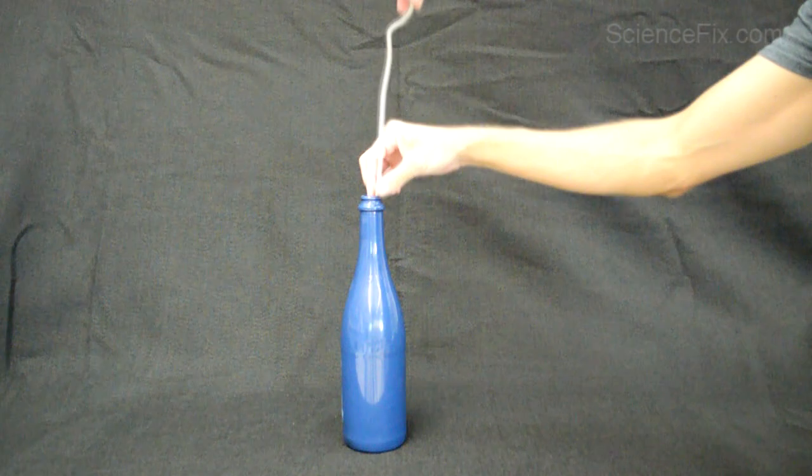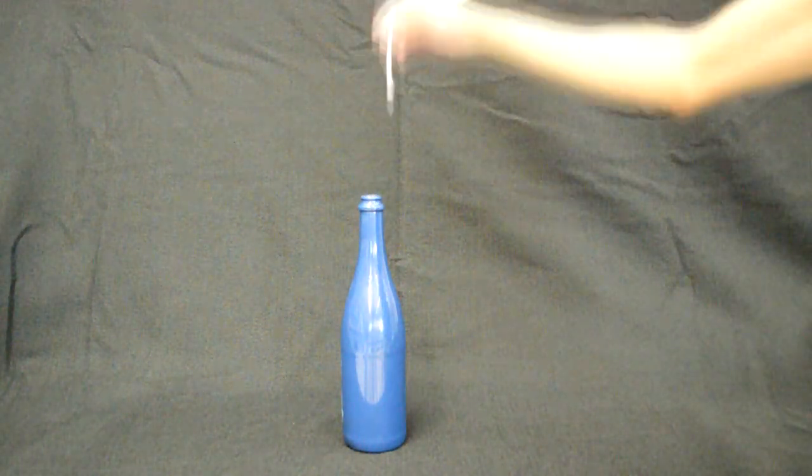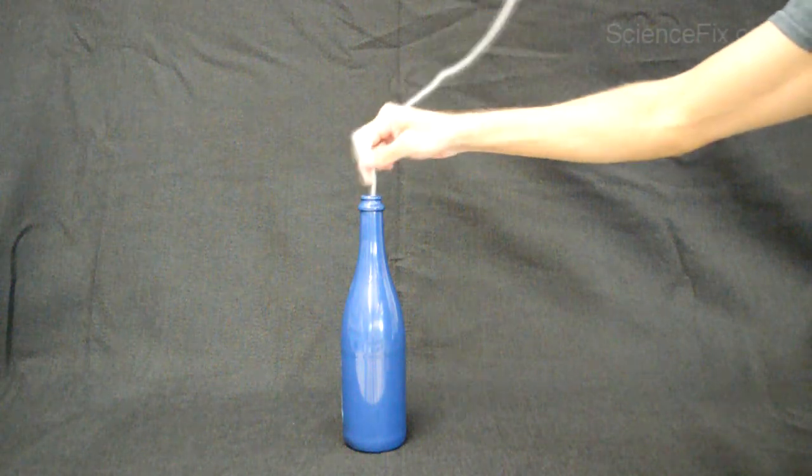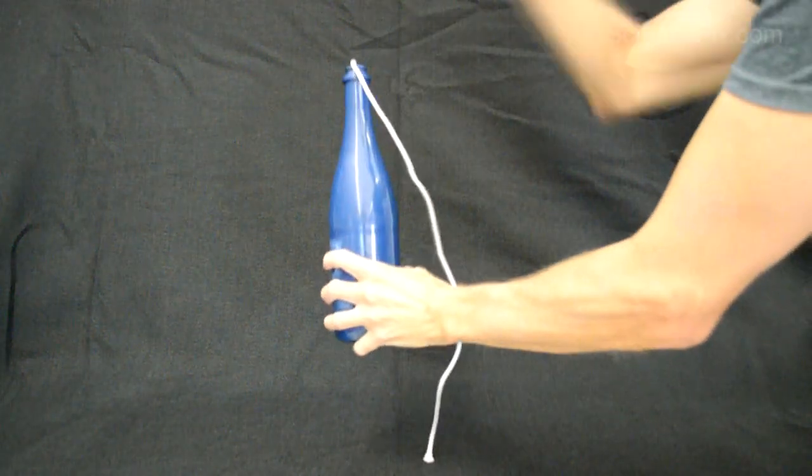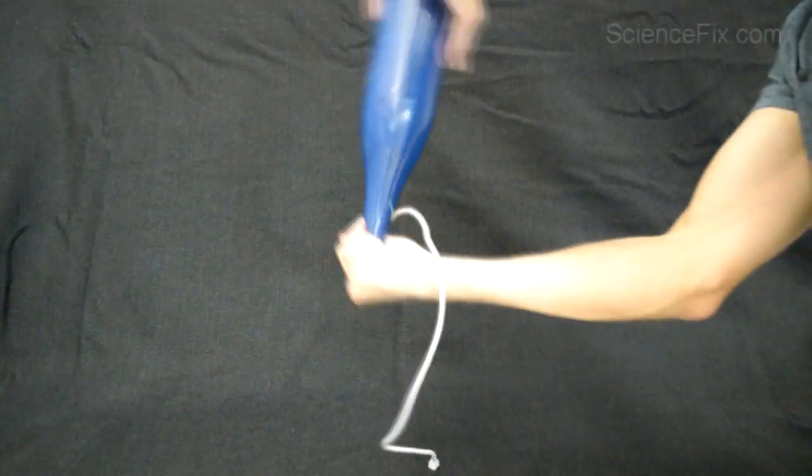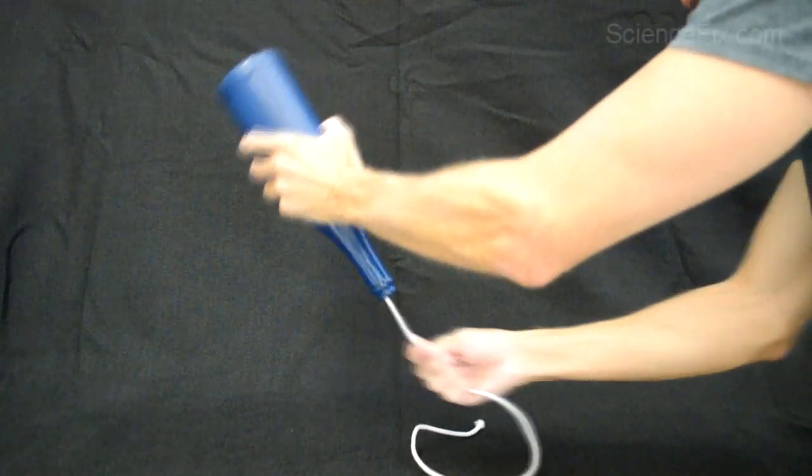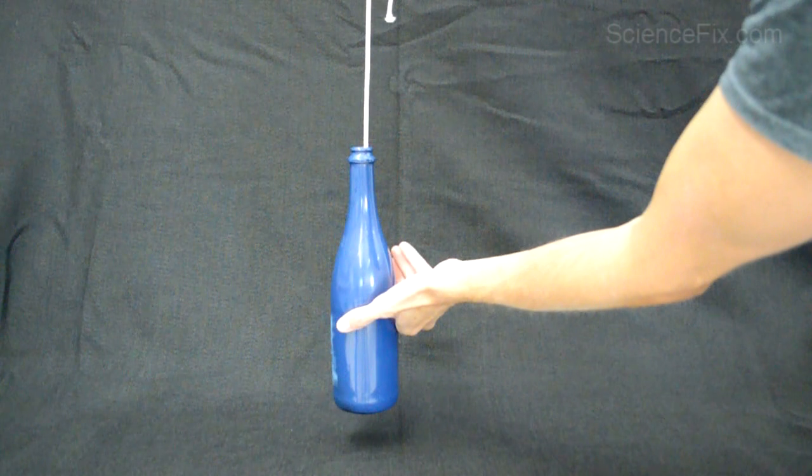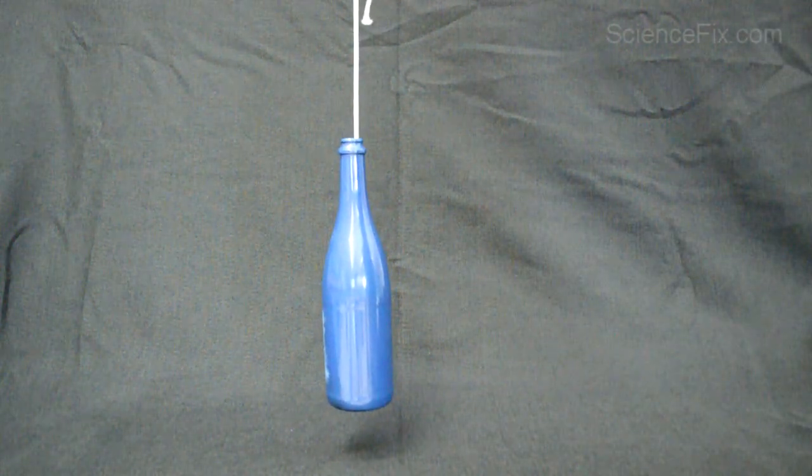This time we're going to use some magic words. We're gonna say the magic words: abracadabra. Let's see what happens. We're gonna pull up on the rope and wow, the wine bottle mysteriously hangs from the rope.